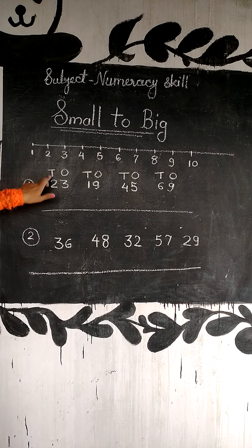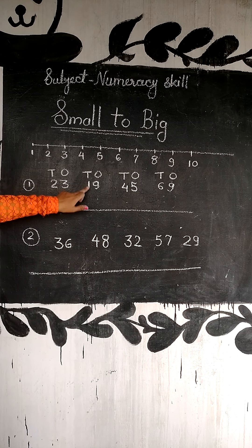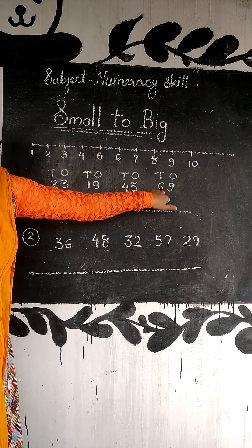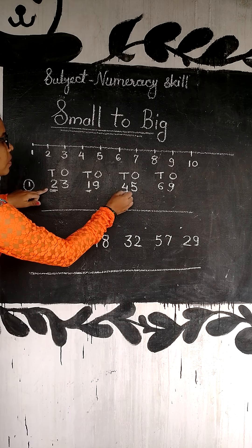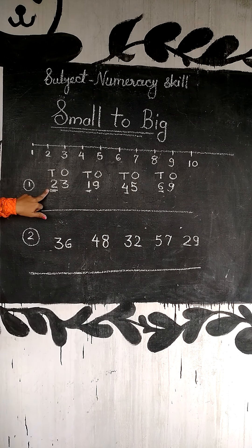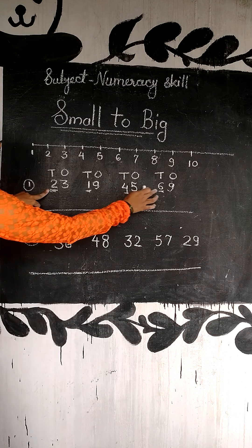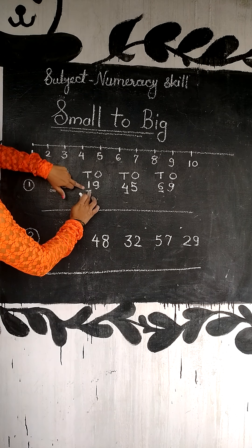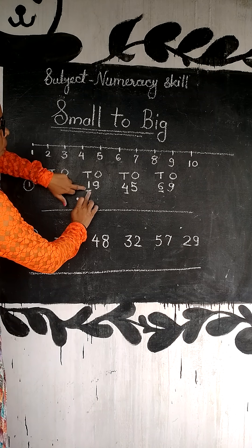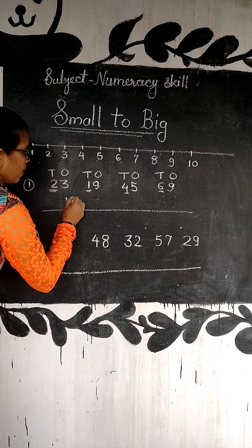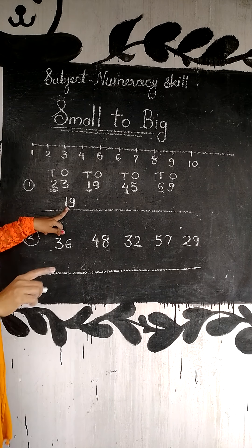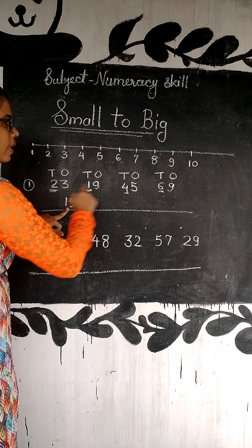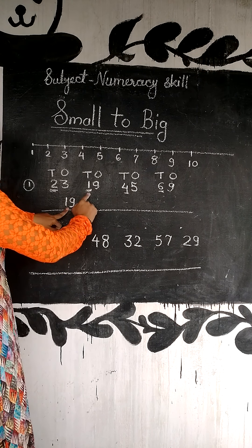Now, the numbers are 23, 19, 45, and 69. We write their tens and ones: 23 has tens digit 2 and ones digit 3. Then 19, 45, and 69. Look at the tens place — which is the smallest number there? The tens digits are 2, 1, 4, and 6. So 1 comes first, which means 19 is the smallest number.